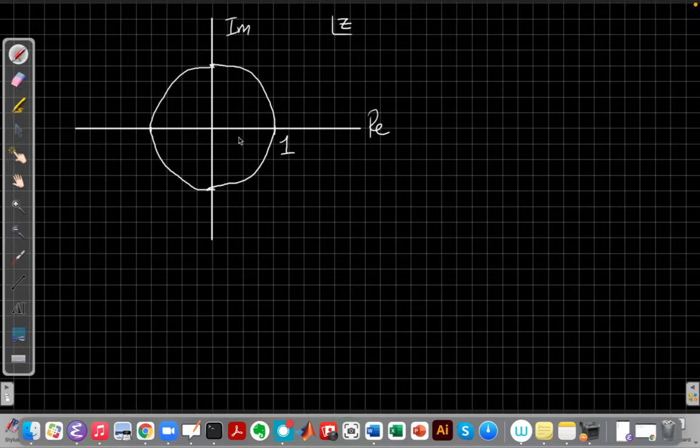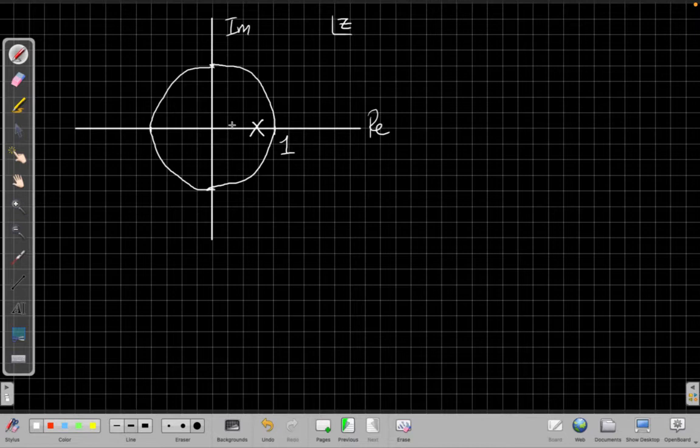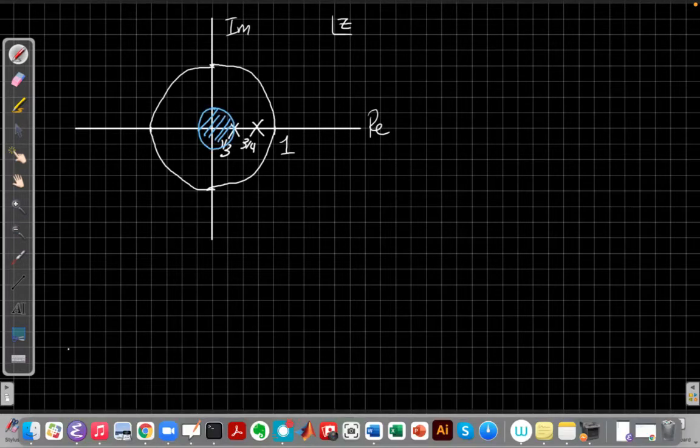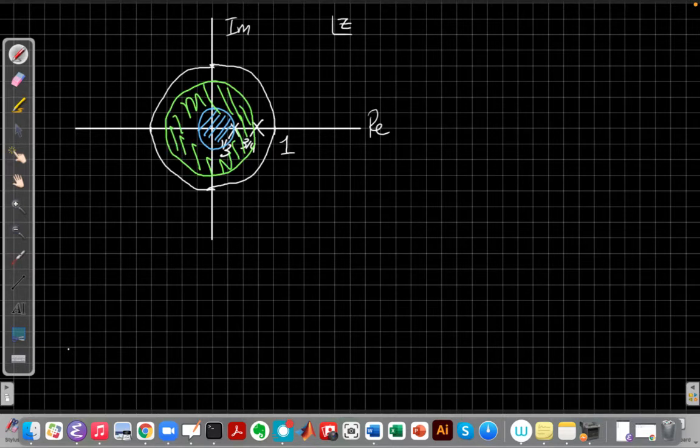But let me sketch my pole-zero diagram first. Okay, so here's my unit circle. And I said my poles were at 3/4 and 1/3, which would be about here. And so the other important property is to say, well, I have, while looking at this, I would have three choices for the region of convergence, right? One choice would be to be inside 1/3, right? So that would look like, inside 1/3 looks like that, the blue region. Another choice is between 1/3 and 3/4. And that would be the green region that I've just shaded there.